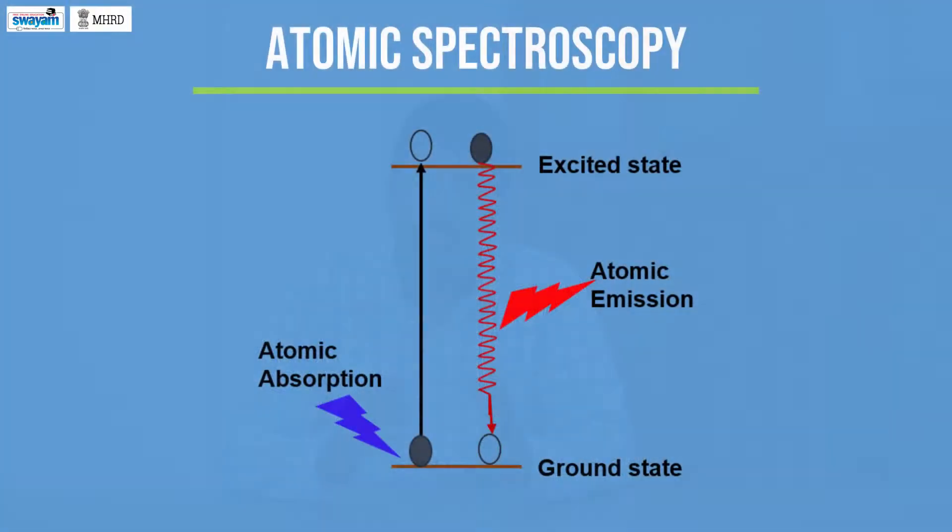As per quantum mechanics, these energy levels are said to be quantized. That means each energy level possesses specific energy rather than any arbitrary energy. This diagram explains the atomic absorption and emission processes. Atomic energy levels arise because of the presence of electrons in different atomic orbitals.